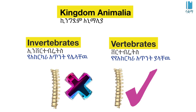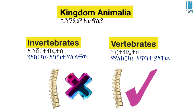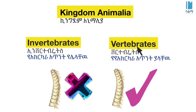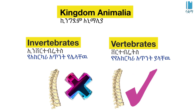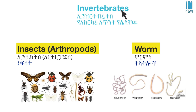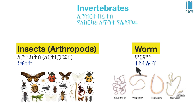Invertebrate animals are those that lack a backbone. Among invertebrates, major groups include animals in the phylum Arthropoda — such as insects — and worms found in various phyla.